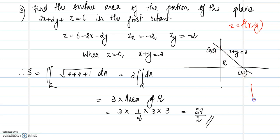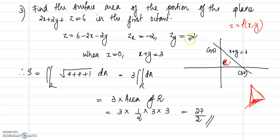We need to find the triangular region R in the xy-plane, which is bounded by x = 0, y = 0, and x + y = 3. The surface area formula gives √((−2)² + (−2)² + 1) = √9 = 3. So the surface area is 3 times the double integral over R of dA, which equals 3 times the area of region R.